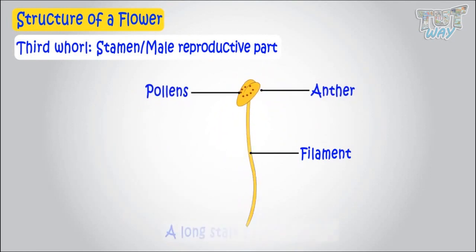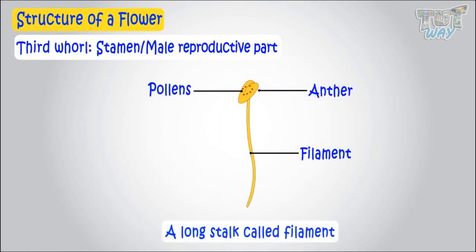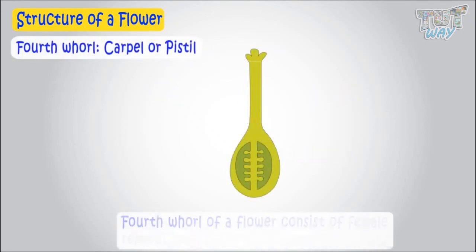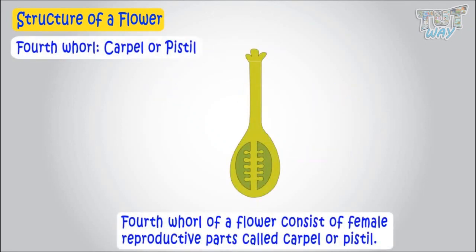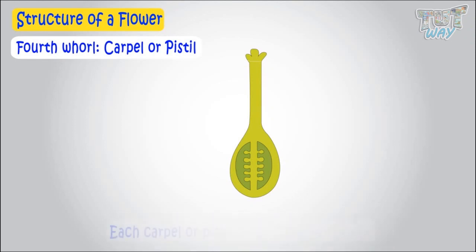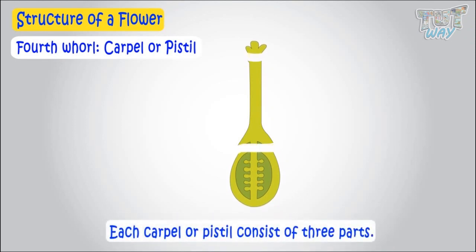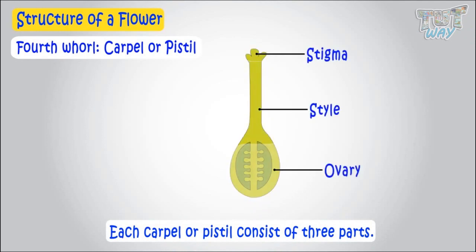A long stalk called filament. Fourth whorl of a flower consists of female reproductive parts called carpel or pistil. Each carpel or pistil consists of three parts, stigma, style and ovary.